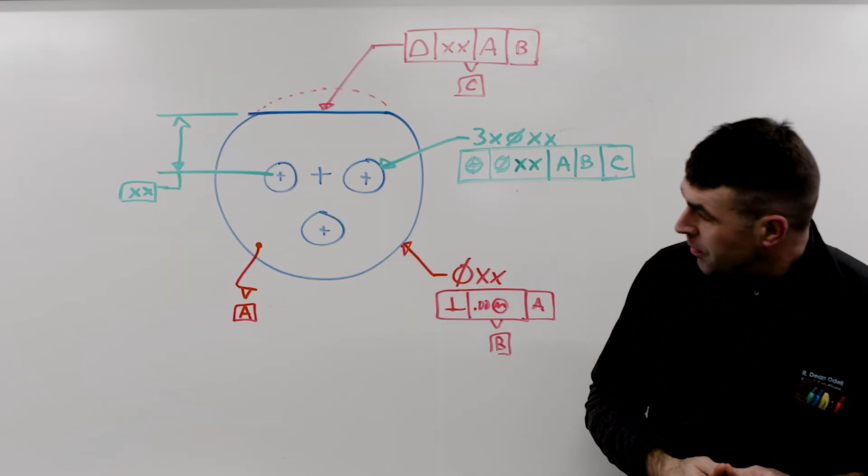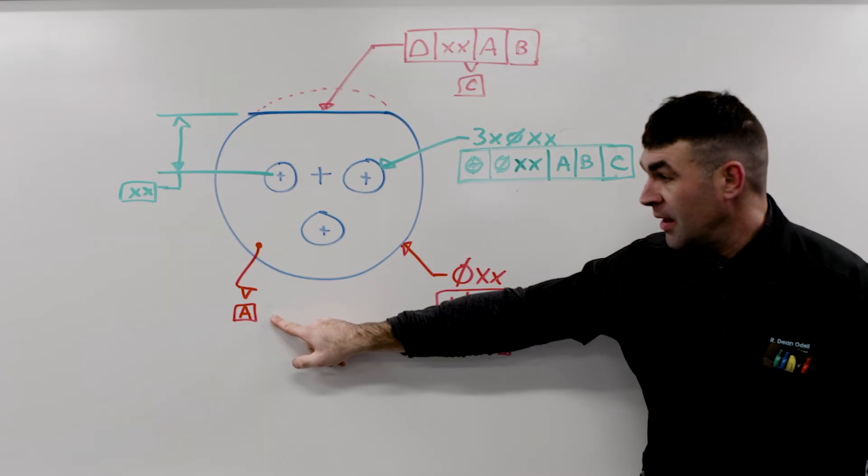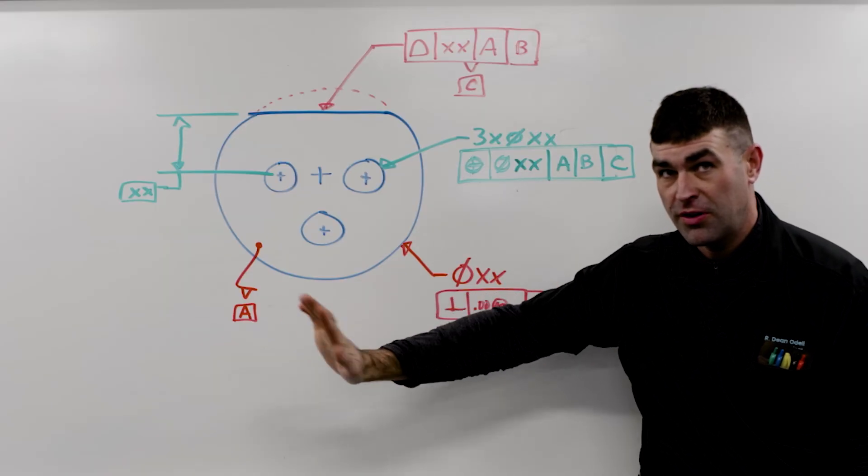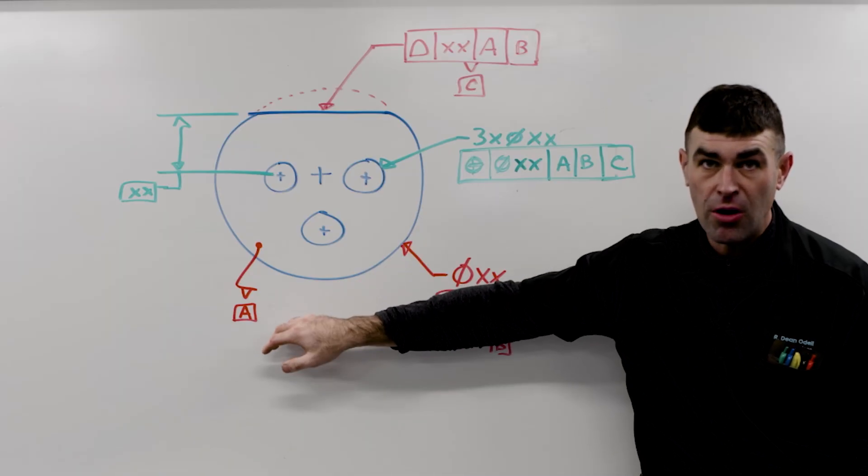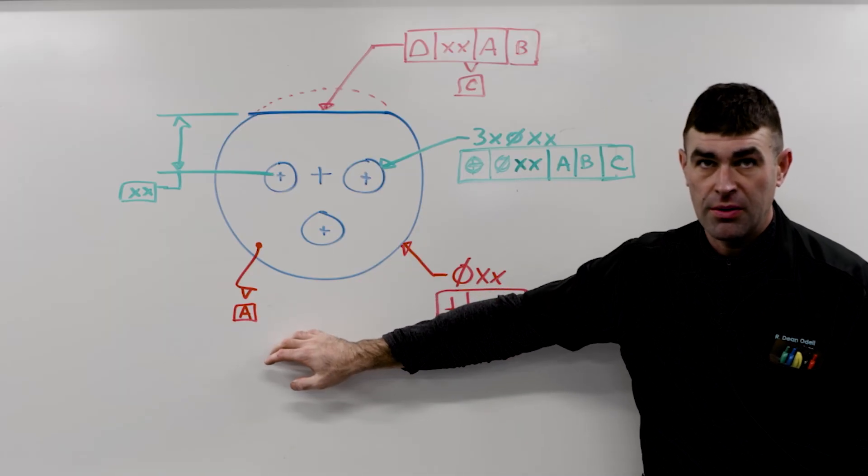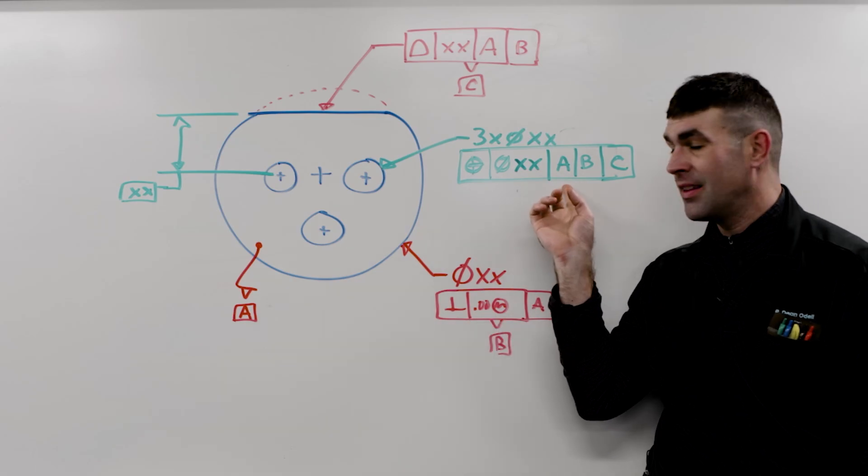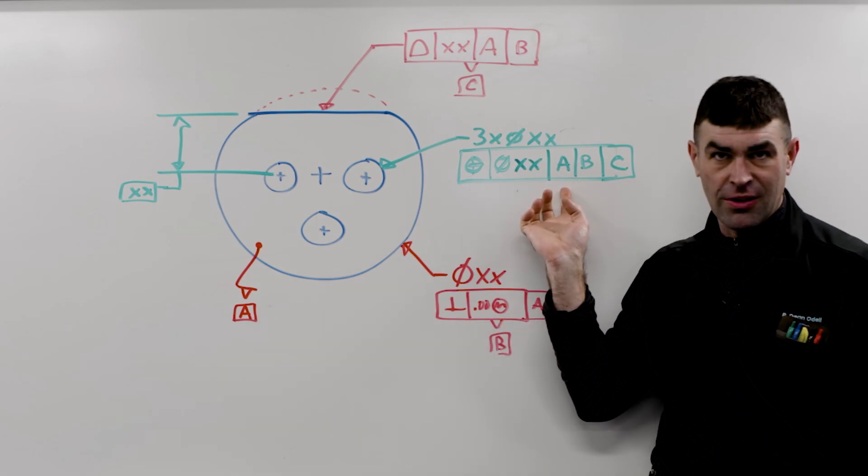For example, datum A is a surface, no material condition, right? It can't have MMB or RMB or LMB. So it's really incorrect to say this is an RMB because it's just a surface.